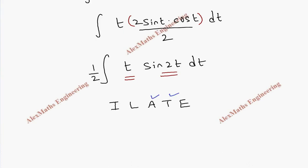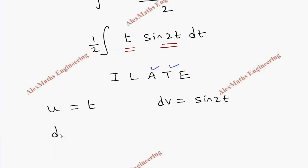This is coming first in the order of ILATE, so it is taken as u, that is t. The second is dv which is sine 2t. Differentiation of this is du which is dt, and integration of this is v.